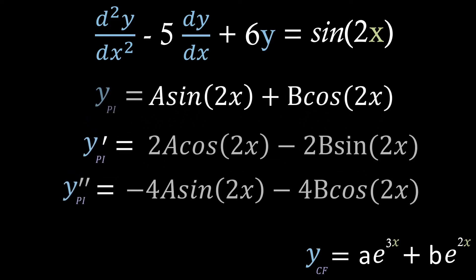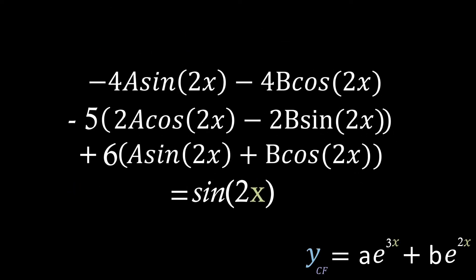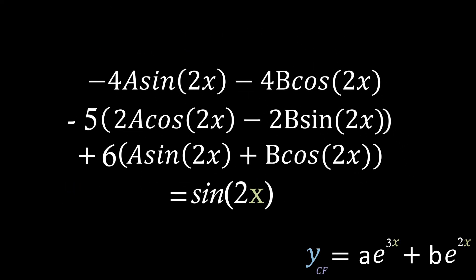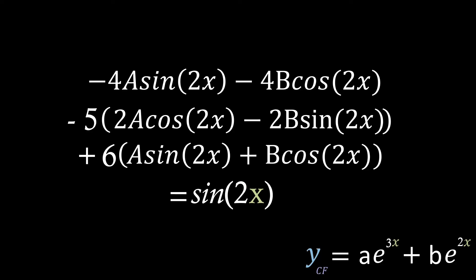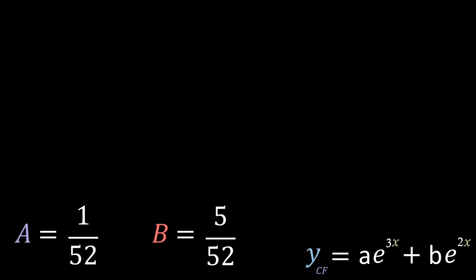After we've done this, we're going to substitute this in, and then solve some simultaneous equations where we look at the coefficients. For example, we know that we're going to have 1 sine, but 0 cosines, so we can solve for a and b. We find a to be 1 over 52, and b to be 5 over 52.